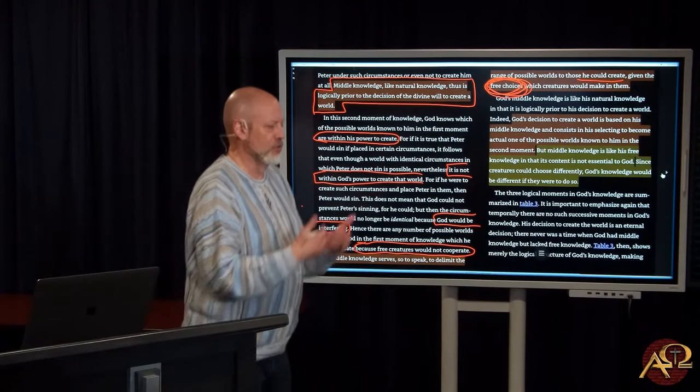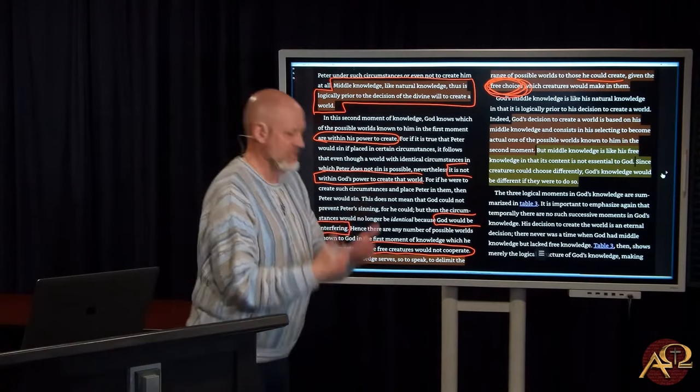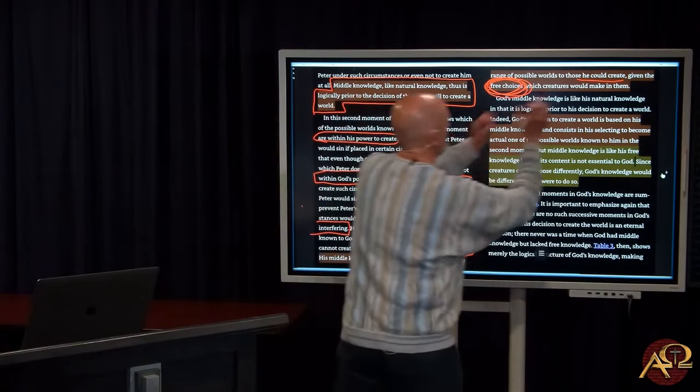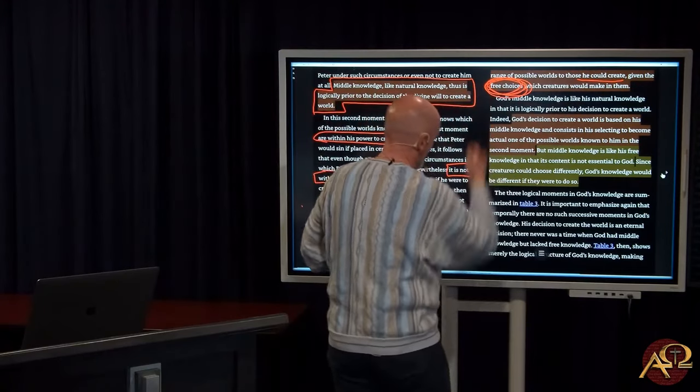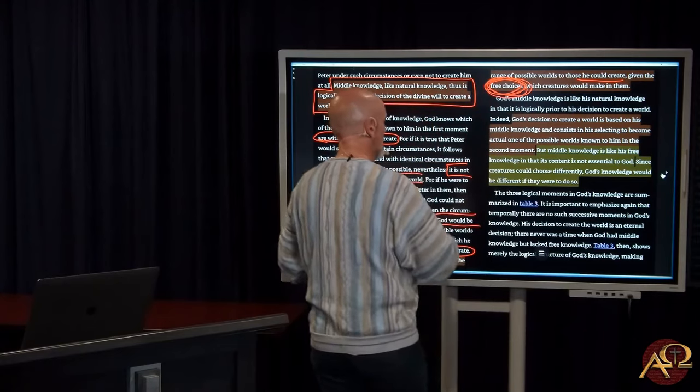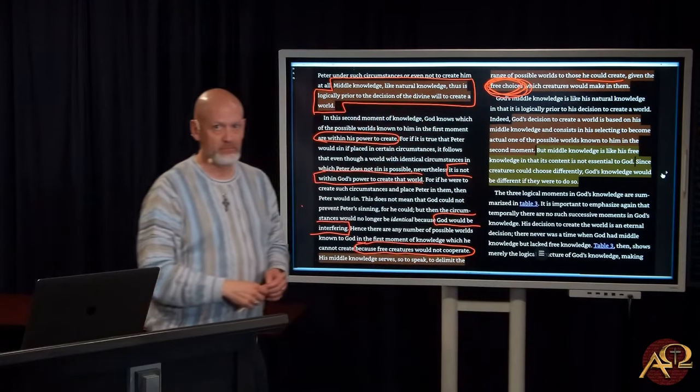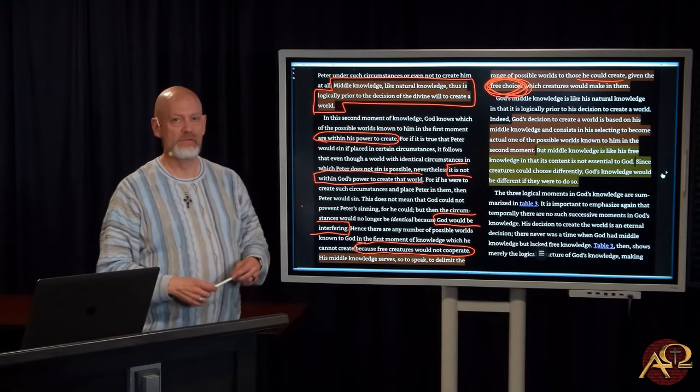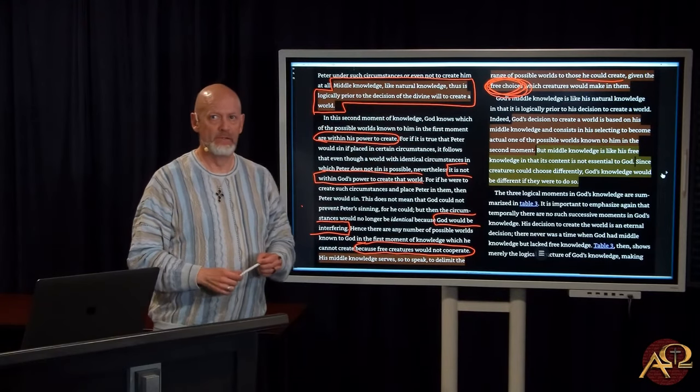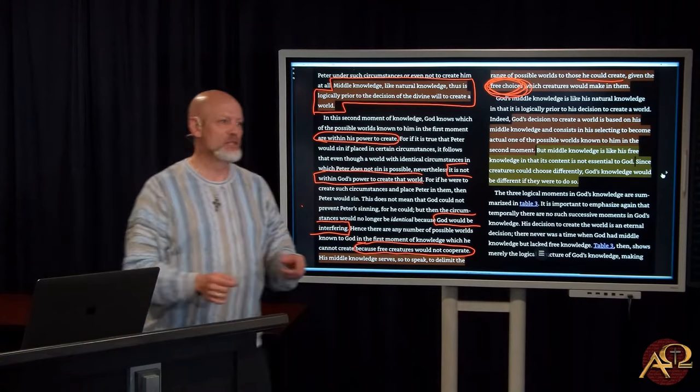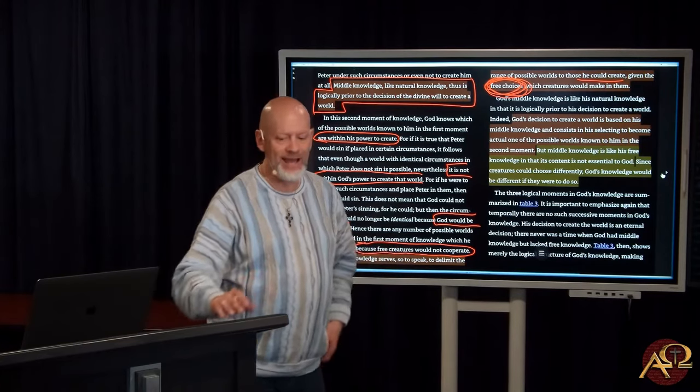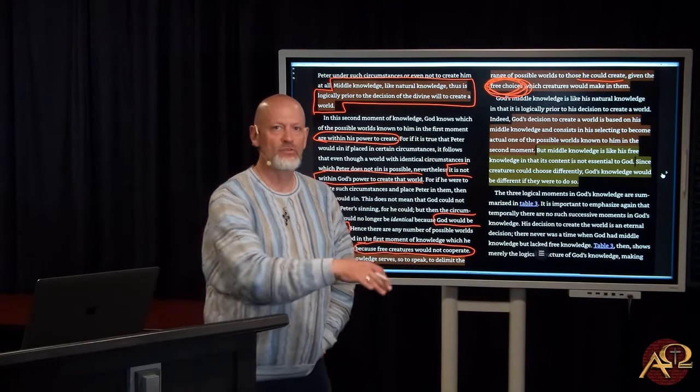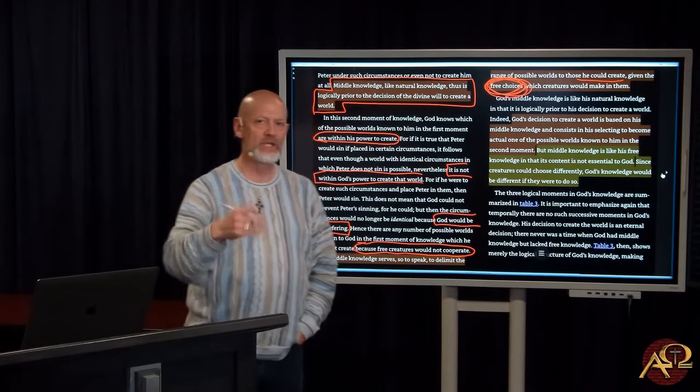God has not decreed, made the decision—remember we had natural, free, here is the decree to create, and middle knowledge comes before that. So God has not defined any of these free creatures. If you have middle knowledge of exactly what those free creatures would do, then God is not free to create those creatures in such a way as to glorify him in the way he desires to be glorified.